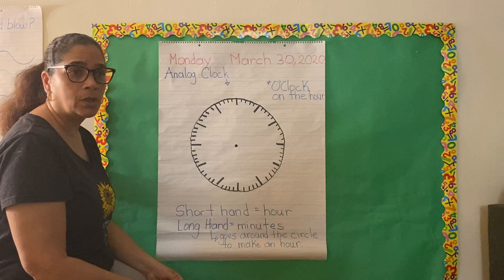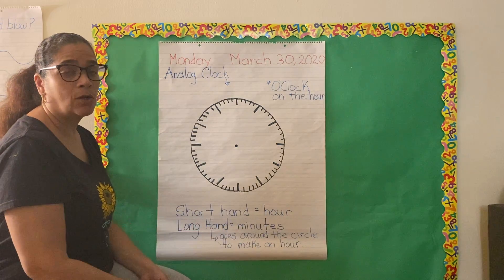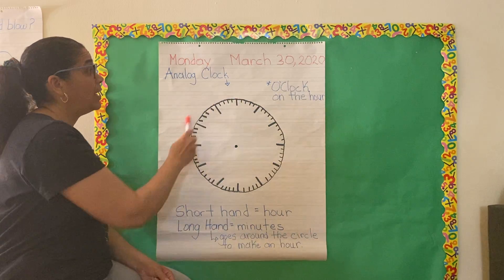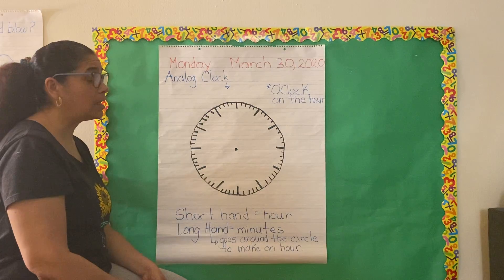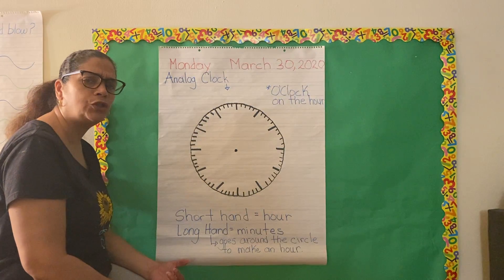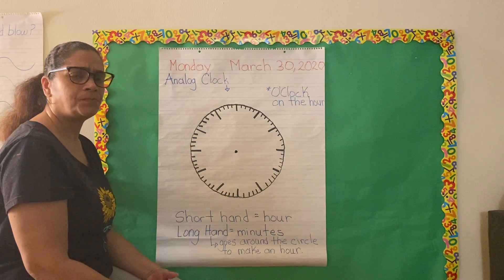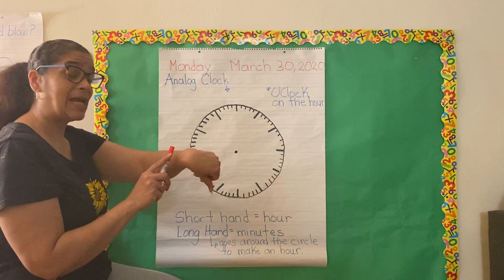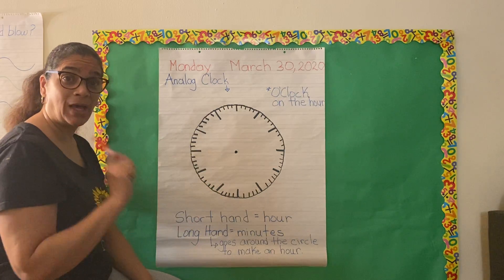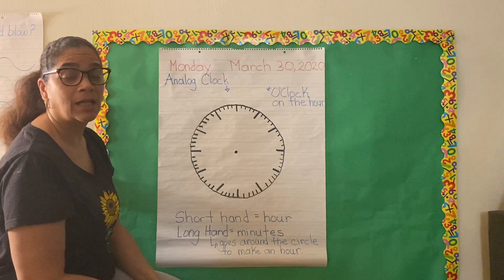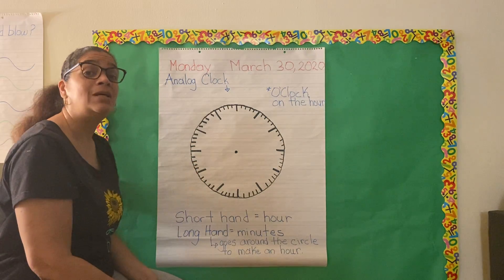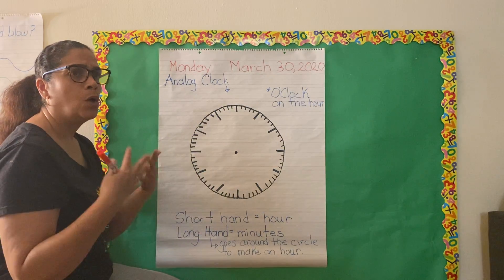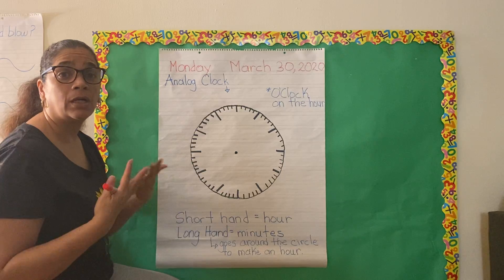Before we broke and started this extended homeschool learning, we were learning about clocks — specifically an analog clock. You can see one at home, we have one in the classroom, you may see one on the wall at the store, or if your parents or you have a watch, that's a small analog clock you can tell time with. Time is a measure of what hour or minutes are in the day.